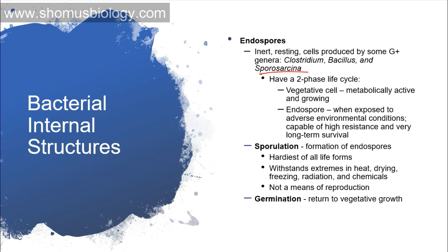When exposed to adverse environmental conditions, they are capable of high resistance and very long-term survival in that harsh environment, because they are covered with several external cover layers outside that help protect them against environmental damage. But when the environment turns normal, those spores can again shift back to the normal vegetative mode of cell division.